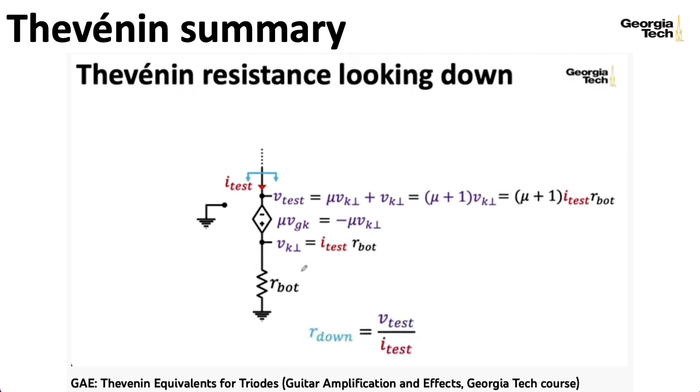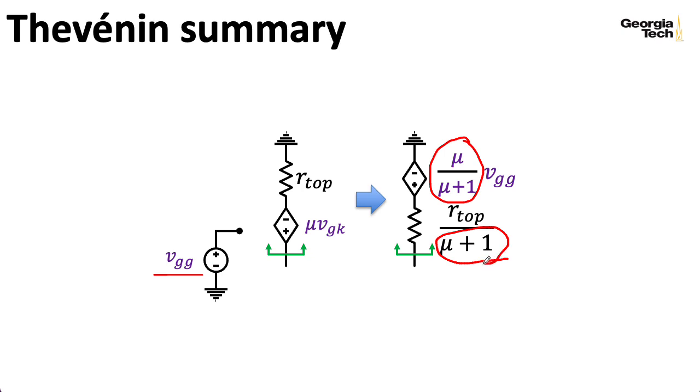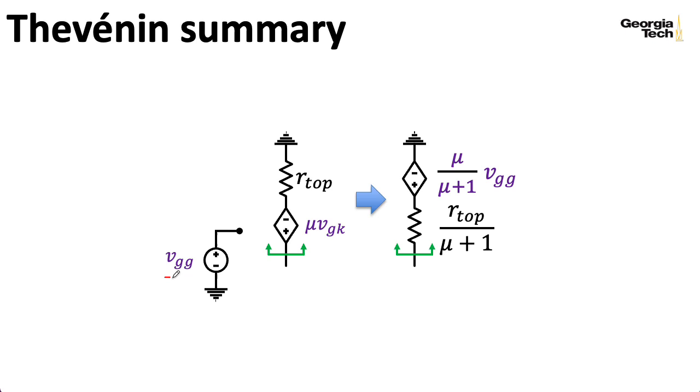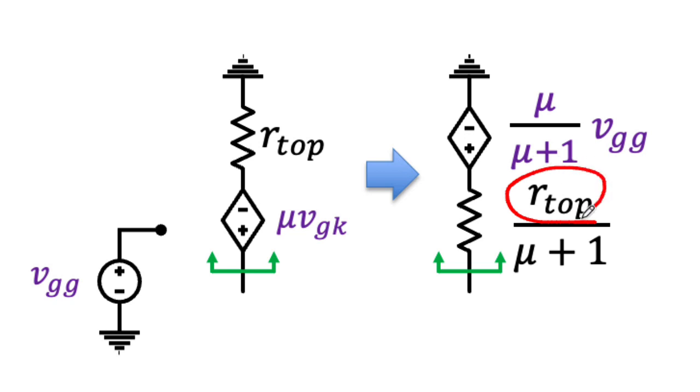We also have a Thevenin resistance in series with this Thevenin voltage. That's this R-top divided by mu plus one. So remember, in the other Thevenin equivalent looking down into the negative terminal, we took the resistance on the other side and multiplied it by mu plus one. But here, we divide by mu plus one. So I think that's a really interesting symmetry, and it has some consequences for the circuit and why it makes such a good voltage buffer. In this particular case, VGG just corresponds to our VIN, and the RL in series with RP, so that's RL plus RP, that corresponds to our R-top.